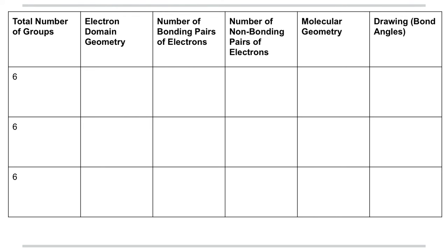So our last set is based on six groups attached to a central atom. These are all based off of a shape called octahedral. There are three different ones that we're going to look at.